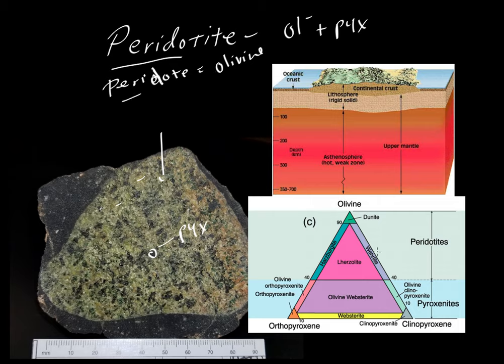Now take a look at this diagram here. Both these diagrams are from the textbook by John Winter. He's showing the USGS classification of so-called ultramafic rocks. Ultramafic means that they are ultra, or they have extra amounts of mafic minerals.